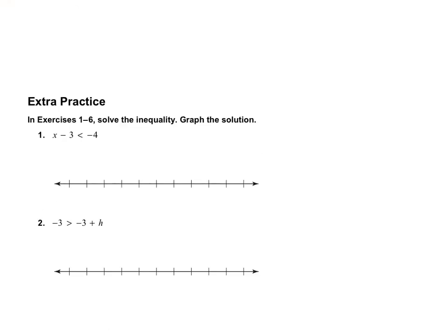So that means that we can solve these inequalities. In exercises 1 through 6, solve the inequality and graph the solution. So number 1, we have x minus 3 is less than negative 4. So I'm going to draw my line here. Circle my variable just like we did when we had an equality, and I'm going to do the opposite of minus 3. So we're going to add 3 to both sides, and we end up getting x is less than negative 1.